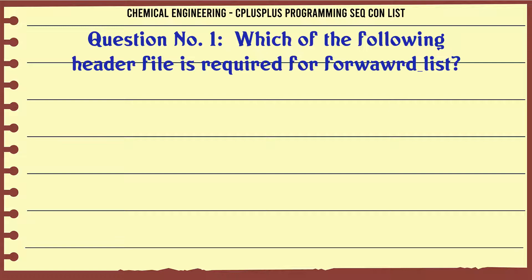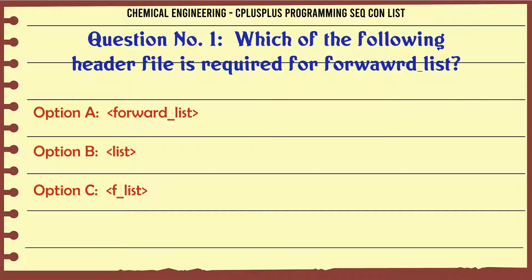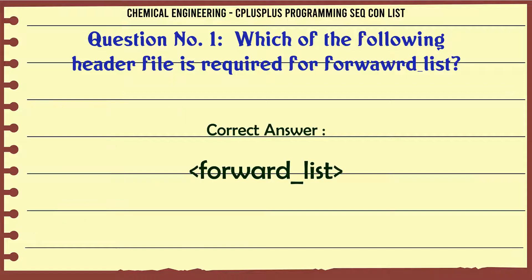Which of the following header files is required for forward list? A. forward_list. B. list. C. flist. D. forward_list. The correct answer is: forward_list.